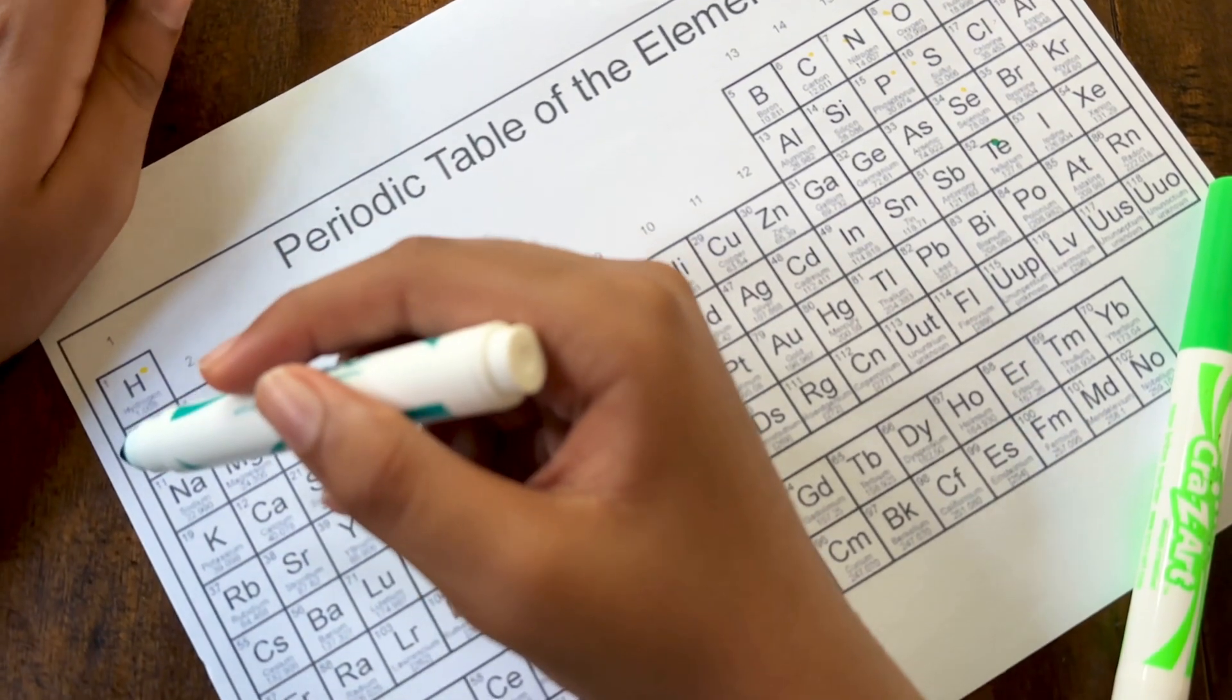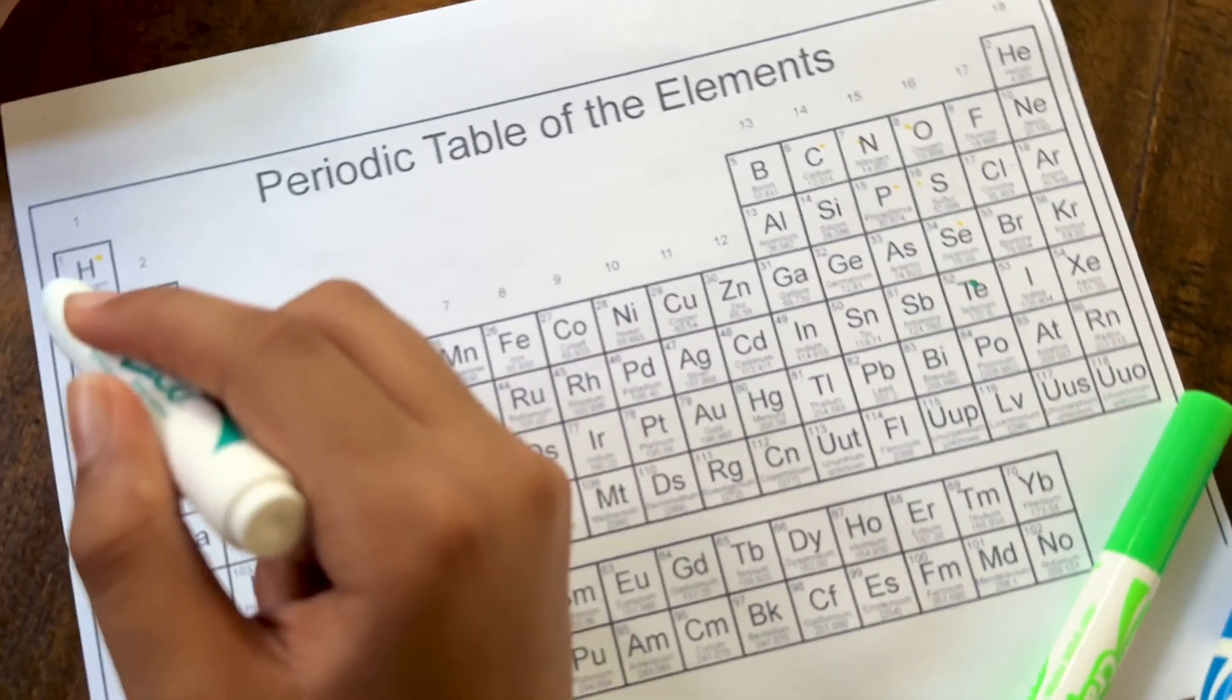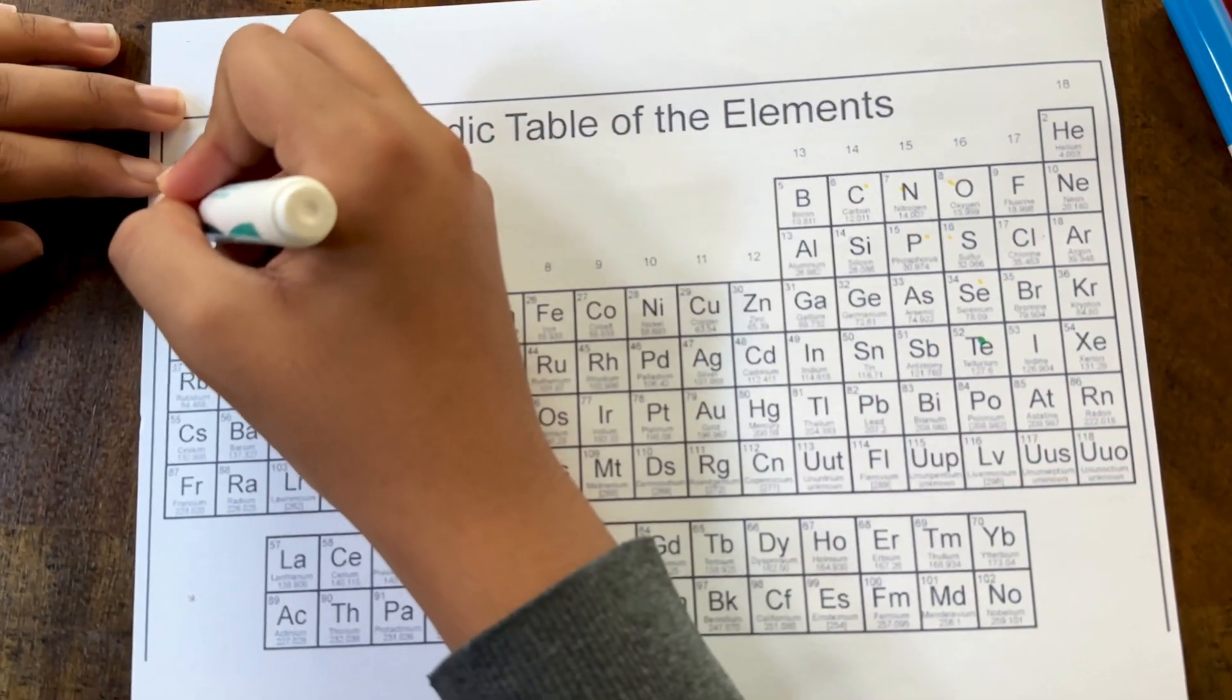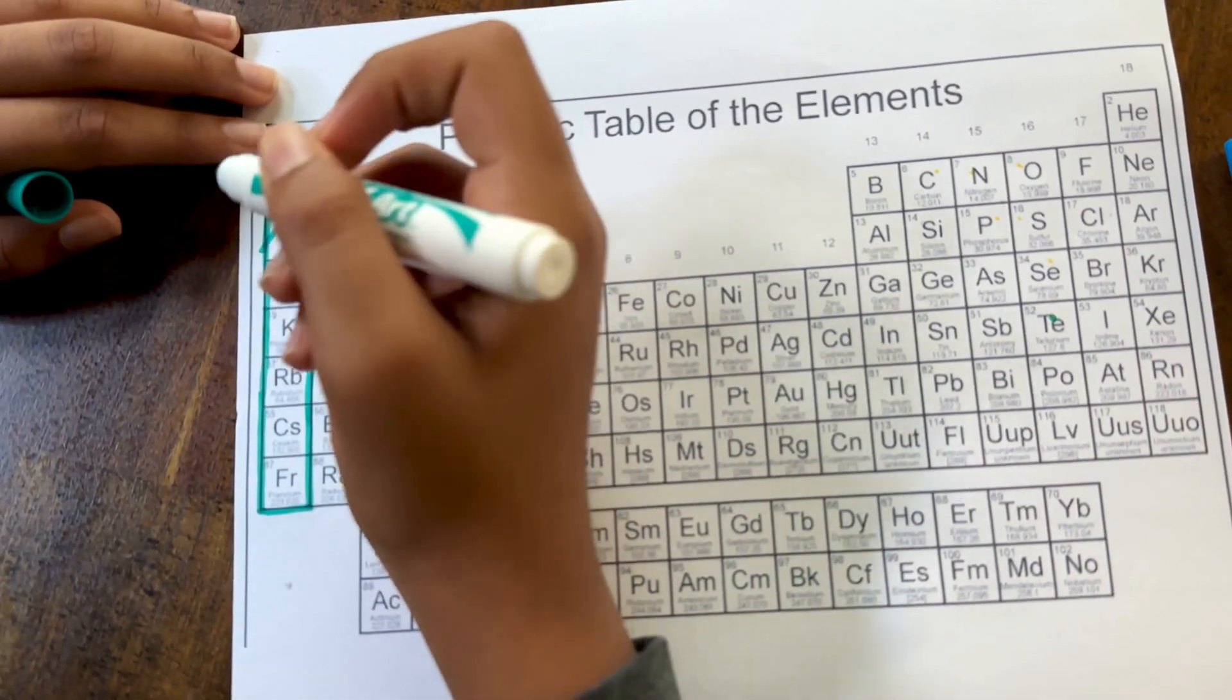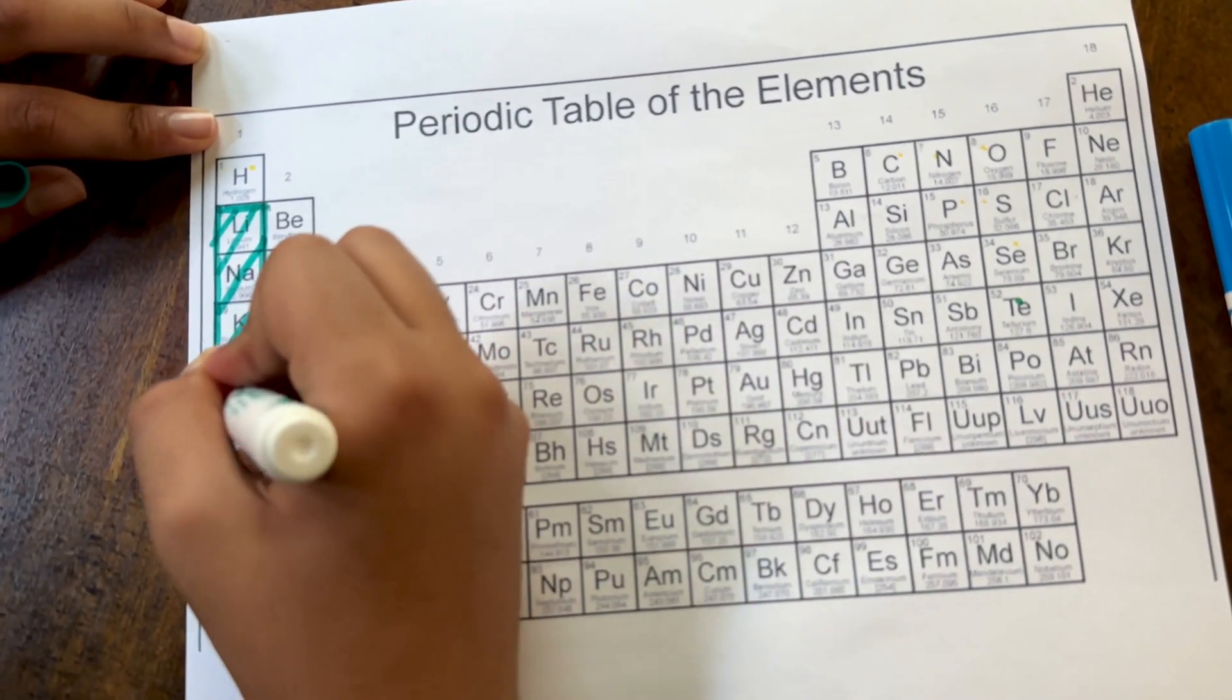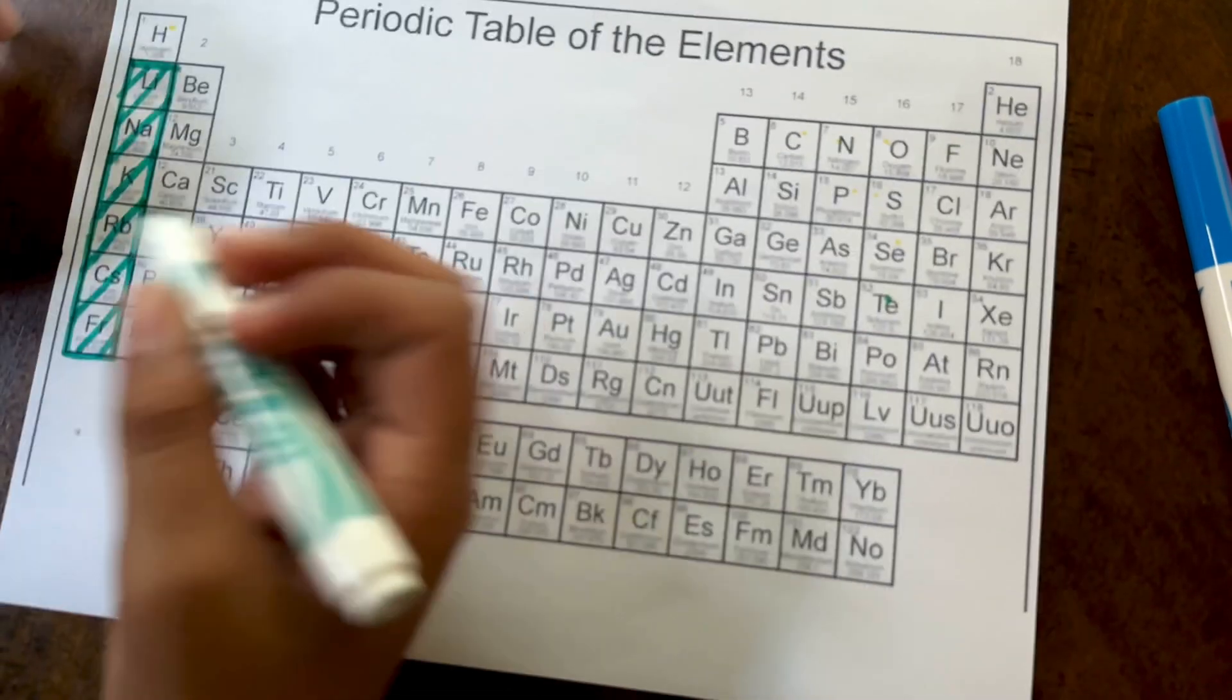Alkali metals are in group 1, which means they only have one valence electron. When an element has only one valence electron, it tends to be super reactive and tries to lose that valence electron. Alkali metals are highly reactive and tend to lose it fast because they only have one valence electron and are part of the metals category.